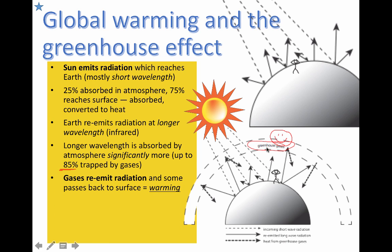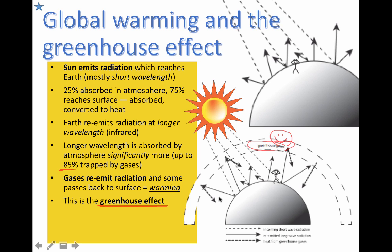These greenhouse gases happen to absorb a lot of this infrared radiation. The wavelength is just the right amount so that the bonds inside the molecules of some of these greenhouse gases can absorb it. Probably the most famous is carbon dioxide, because that's the one humans are putting a lot of into the atmosphere. Carbon dioxide is really good at absorbing this infrared radiation and then re-emitting it back to the surface, and that's what contributes to this warming. We call this the greenhouse effect. When humans enhance it, we call it the enhanced greenhouse effect.